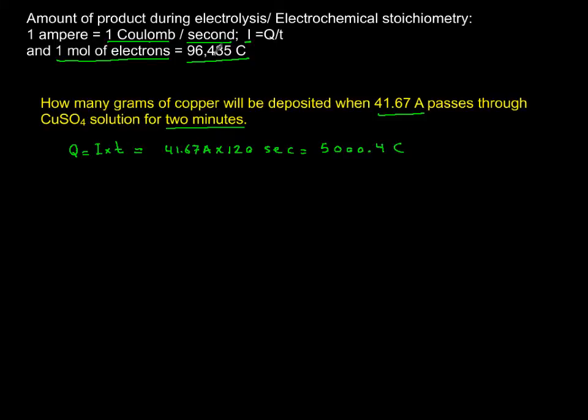Now one mole of electron carries this much coulomb, so I should be able to convert this to moles of electron. I can say 96,485 coulomb is equal to one mole of electron. So moles of electrons after I have this much current for two minutes, X is calculated to be 0.0518 moles of electron.